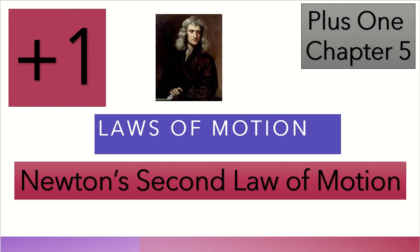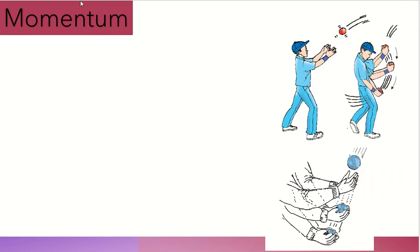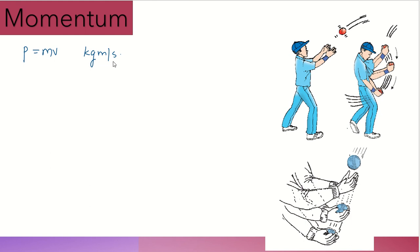The second law of motion involves momentum. We denote momentum with the letter P. P is equal to mass into velocity. Mass into velocity is momentum. The unit of mass is kilogram and the unit of velocity is meter per second, so the unit of momentum is kilogram meter per second.